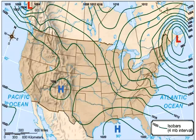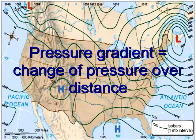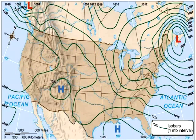Horizontal variations of air pressure are depicted on weather maps by isobars. An isobar is a line of equal barometric pressure on a weather map. The amount of pressure change occurring over a given distance is called pressure gradient. A weak pressure gradient is depicted by widely spaced isobars.